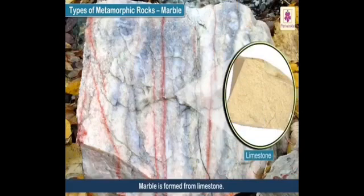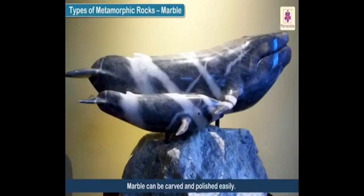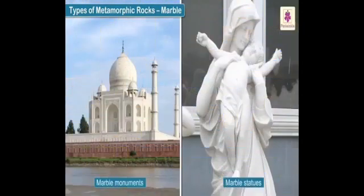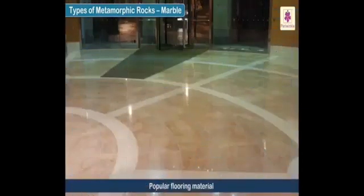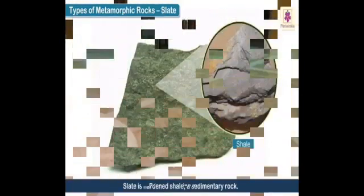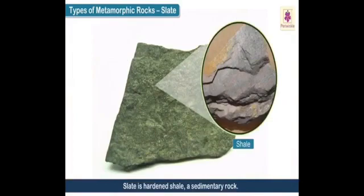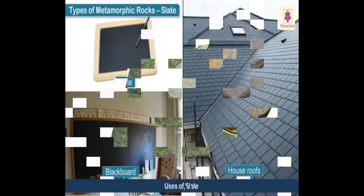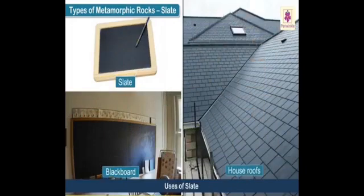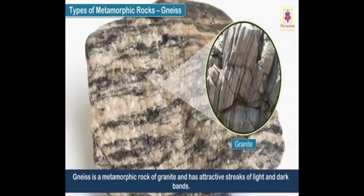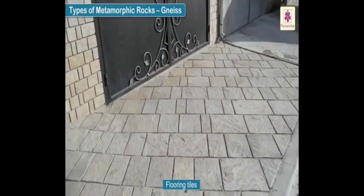Marble is formed from limestone. Marble can be carved and polished easily and is therefore widely used. We often find marble in monuments and statues, and it is also a popular flooring material. Slate is hardened shale, a sedimentary rock, and is used in making blackboards, slate tiles, and the roofs of houses. Gneiss is a metamorphic rock formed from granite and has attractive streaks of light and dark bands. Gneiss is sometimes used as flooring tiles.